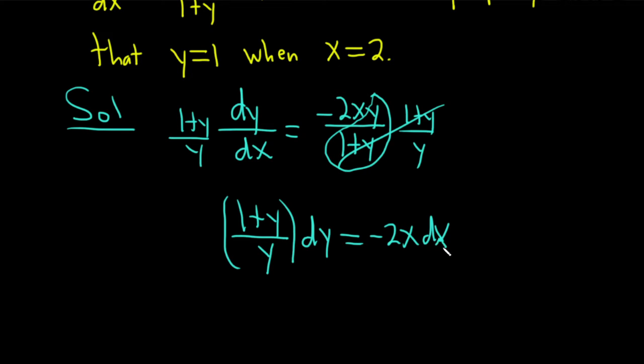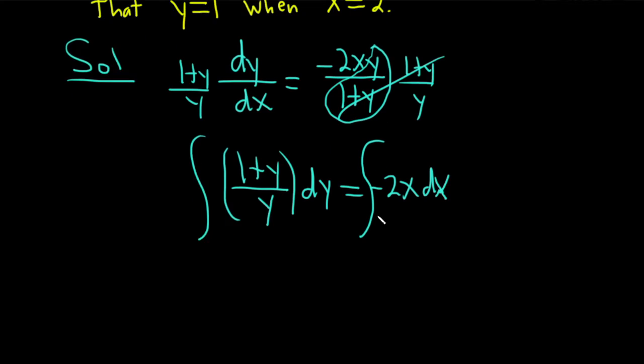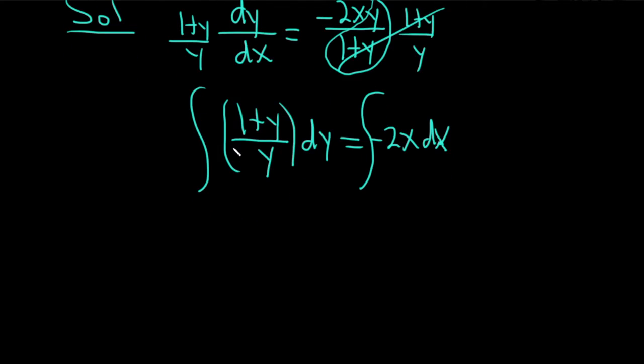And now we just have to integrate both sides. We can break this up. This is 1 over y plus y over y. So it's 1 over y plus, and then y over y is 1. And this is equal to the integral of negative 2x dx.